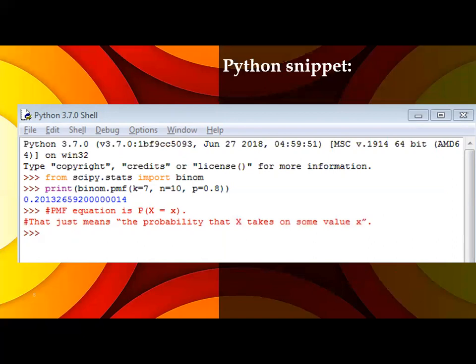And n equals trial, number of trials total will be 10, and probability of getting success is 0.8. If I pass that, I am getting the value 0.21326.